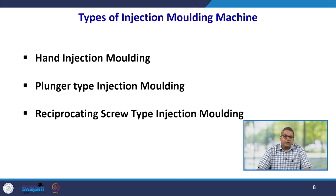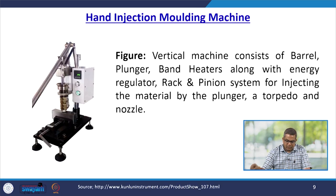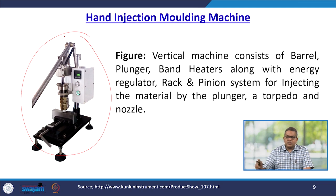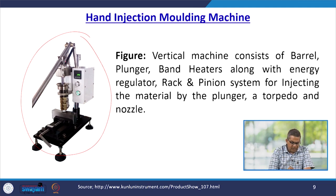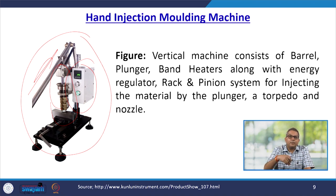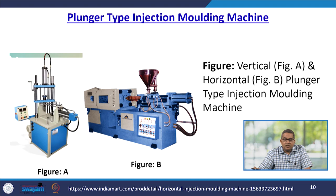We use three different types of injection moulding machines: hand injection moulding, plunger type injection moulding, and reciprocating screw type injection moulding. The hand injection moulding machine is a vertical machine consisting of the barrel, plunger, band heater with energy regulator, rack and pinion system for injecting material by the plunger, torpedo, and a nozzle. Pressure is applied to the system so that the molten polymer can be inserted into the mould.